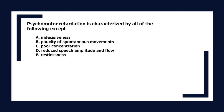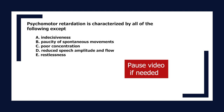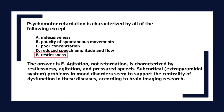Psychomotor retardation is characterized by all of the following except: A. Indecisiveness, B. Paucity of spontaneous movements, C. Poor concentration, D. Reduced speech amplitude and flow, E. Restlessness. The answer is E. Agitation, not retardation, is characterized by restlessness, agitation, and pressured speech. Subcortical and extrapyramidal system problems in mood disorders seem to support the centrality of dysfunction in these diseases, according to brain imaging research.